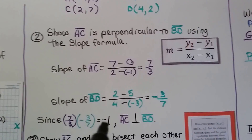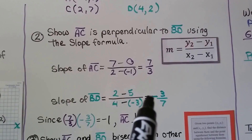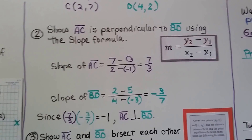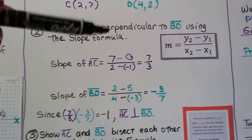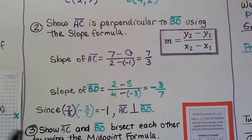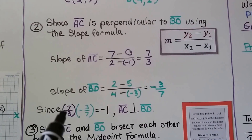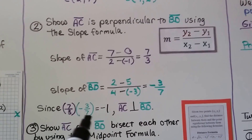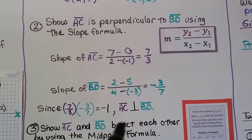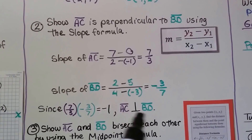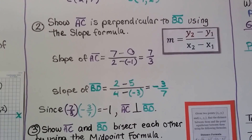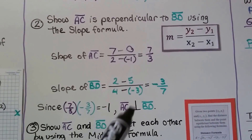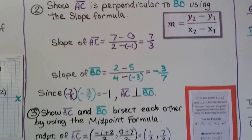When we do the slope of segment BD, we get that it's negative three sevenths. Do you remember what happens to perpendicular lines? Since seven thirds multiplied by negative three sevenths is equal to negative one, then they are perpendicular. Remember: when we multiply the slopes and it equals negative one, they're perpendicular.